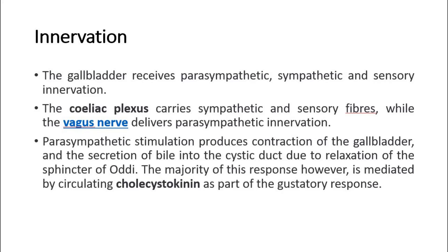For nerve supply, the gallbladder receives parasympathetic, sympathetic, and sensory innervation. The choleic plexus carries sympathetic and sensory fibers, while the vagus nerve delivers parasympathetic innervation. Parasympathetic stimulation produces contraction of the gallbladder and the secretion of bile into the cystic duct due to relaxation of the sphincter of Adi. The majority of this response, however, is mediated by circulating cholecystokinin as part of the gustatory response.